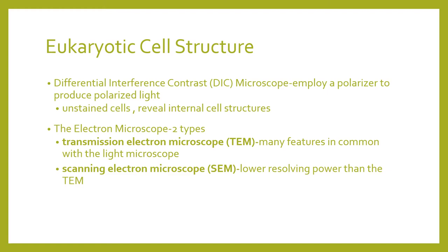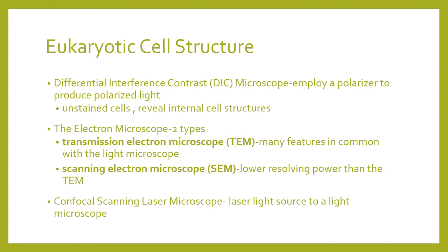The more detailed microscope is your electron microscope, which has two types: the transmission electron microscope or TEM, and the scanning electron microscope or SEM. The TEM has many features in common with the light microscope, while the scanning electron microscope has lower resolving power than the TEM. Another type is the confocal scanning laser microscope, which uses laser light as its source.